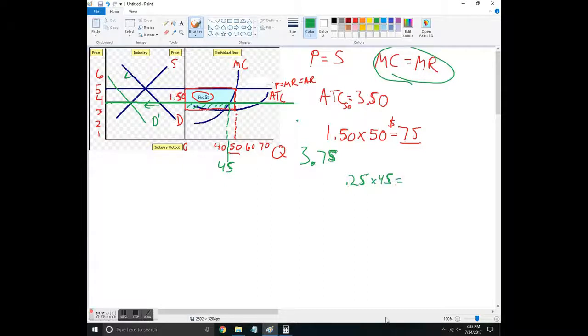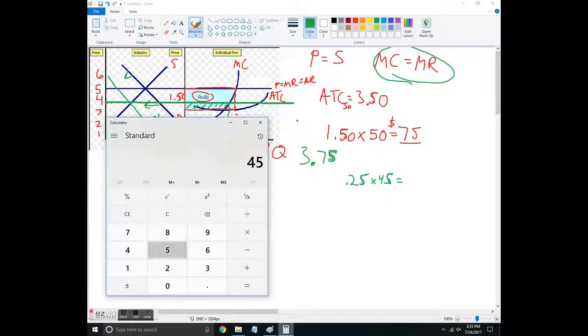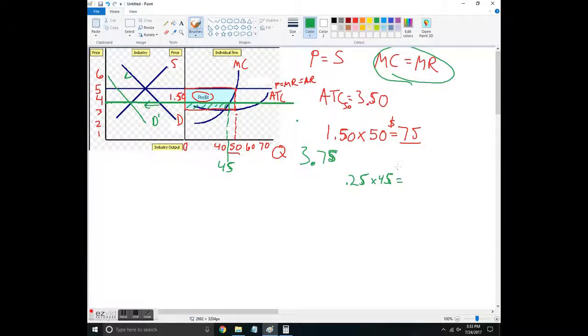...times 45, and we'll get $11.25. So this is a pretty extreme example for this firm, right? Profits went from $75 down to $11.25, just by this demand change.